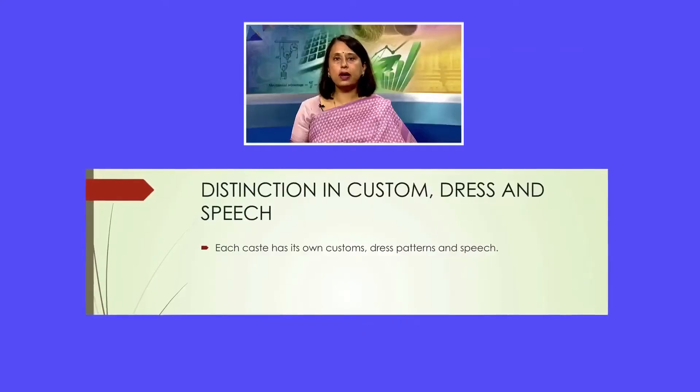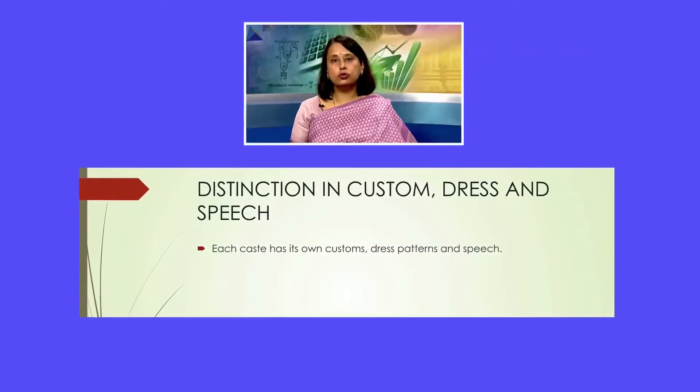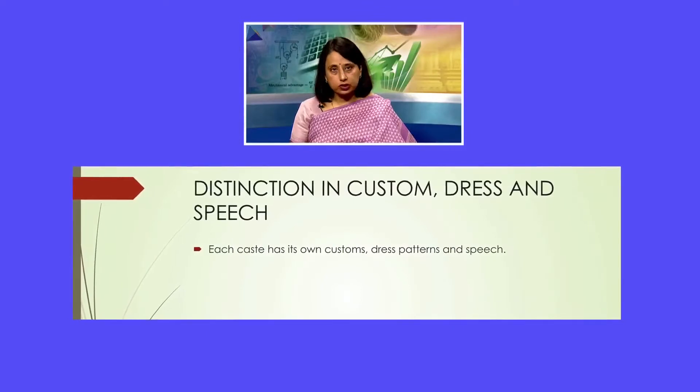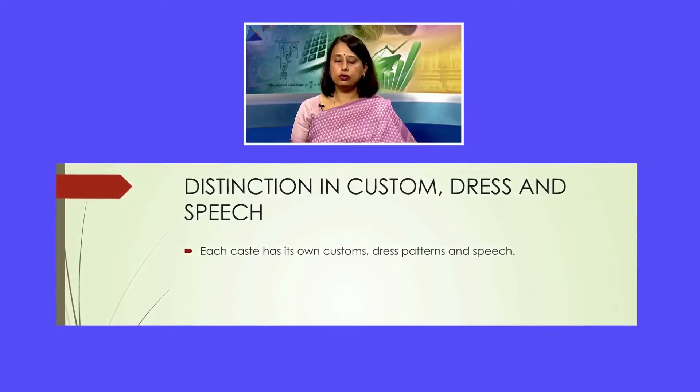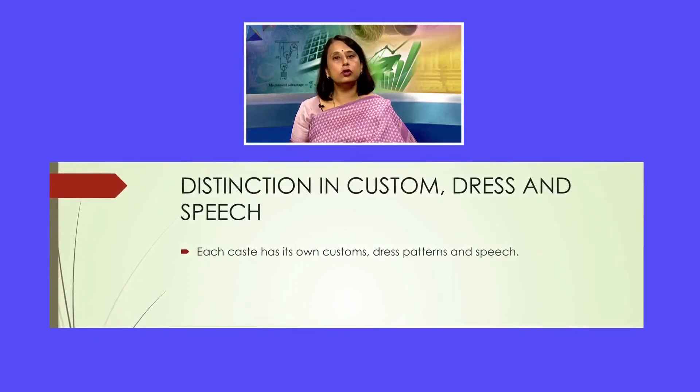No such restrictions were placed on the Brahmans, the Kshatriyas, or the Vaishyas. In terms of speech, each caste group had its own customs, its own dress patterns, and its own speech — so you could easily make out which caste group a person belonged to. For example, the way that you wore your saree differed between caste groups. The way that you wore your dhoti also differed — each caste group would wear a dhoti in a different way.